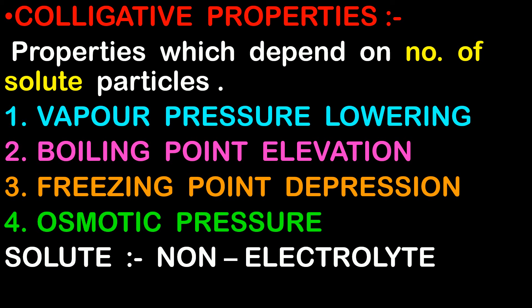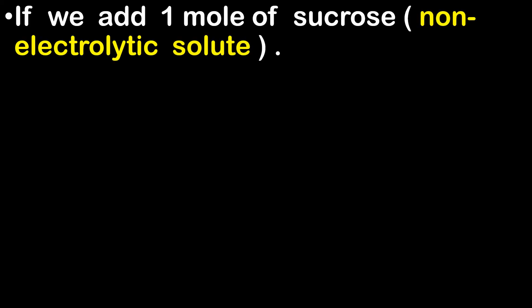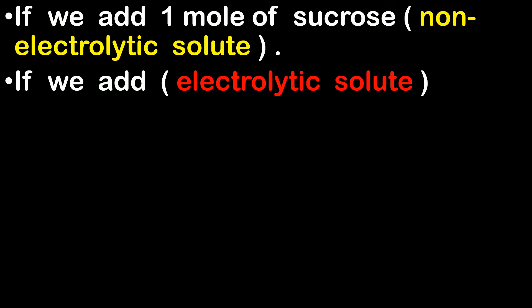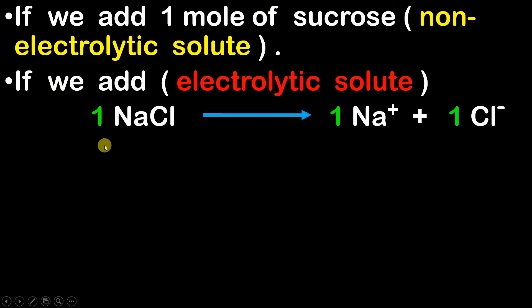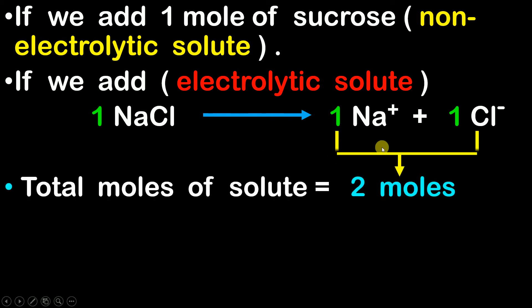What is the difference if we add a non-electrolyte solute and an electrolyte solute? When we add a non-electrolyte solute — for example, 1 mol of sucrose — this 1 mol of sucrose is going to remain 1 mol of sucrose as it is in the solution. But if we add an electrolyte solute, let us say NaCl, when we add 1 mol of NaCl, this 1 mol of NaCl is going to be decomposed into 1 mol of Na⁺ and 1 mol of Cl⁻. So the total number of moles of solute will now be equal to 2 moles.